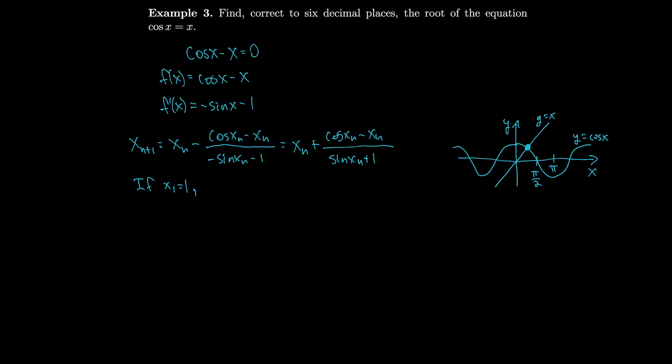If x₁ = 1, then x₂ = 1 + (cos(1) - 1)/(sin(1) + 1), and we get that x₂ is approximately 0.75036387. Plugging in again, we get that x₃ is about 0.73911289. x₄ is about 0.73908513.